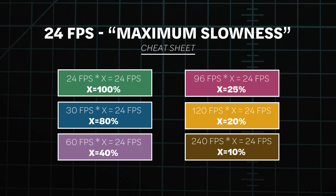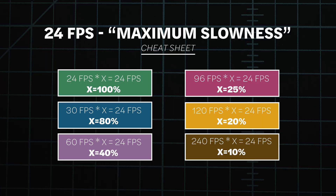Before we get any further, let's use our high school algebra cheat sheet to review the maximum slowness we can drop our clips down into for a 24fps timeline without needing the crazy optical flow processing. Or maybe you can just screen grab this graphic here. Now that we know our limitations without losing quality or using optical flow, let's dive in.